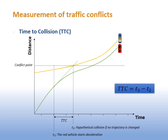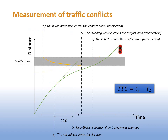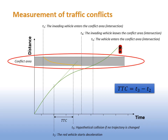Here we have the representation of the time to collision. It is the period of time between when a driver reacts to the potential conflict — braking, slowing down, or performing an evasive maneuver — and the hypothetical collision if the maneuver had not taken place. That was for a road segment. For intersections, the diagram changes a little, since the invading vehicle does not follow the same path. In addition, there is not a single point of hypothetical crossing, but a conflict area at the intersection.